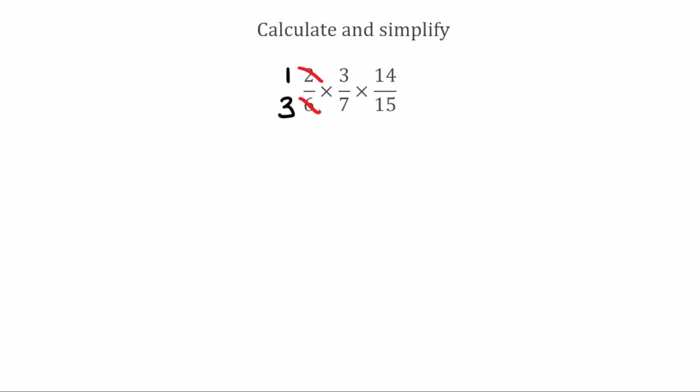Now we're going to look to cross-cancel across the three fractions. We want to check if there's a highest common factor greater than 1 on any numerator and denominator. I can see a 3 on the bottom and a 3 on the top. The highest common factor of 3 and 3 is 3, so I can divide both by 3. 3 divided by 3 gives 1, so I can change both of these to 1.